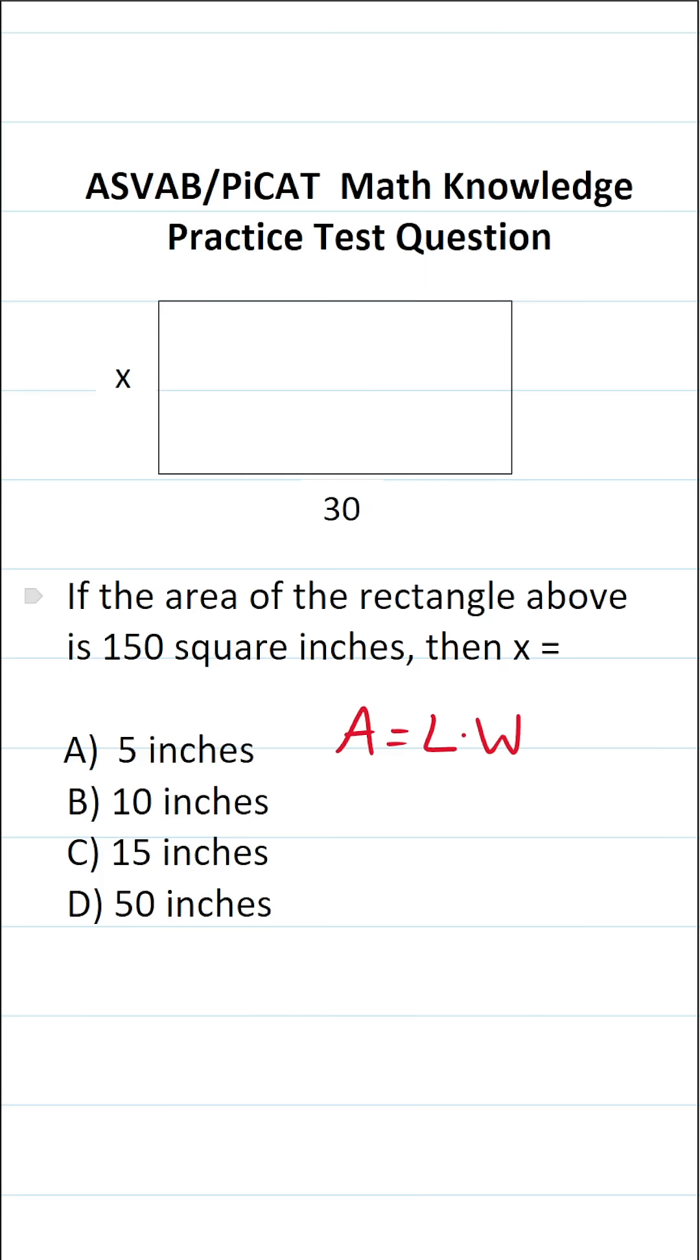That formula is area equals length times width. In this case, we know the area of our rectangle is 150 square inches. So in place of A here, we can put 150.